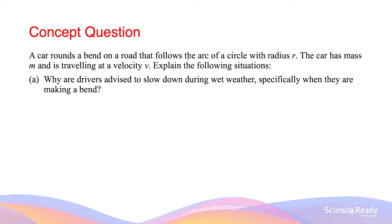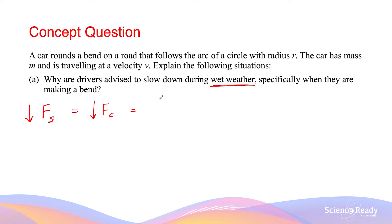A car rounds a bend on a road that follows an arc of a circle with radius r, mass m, and velocity v. Why are drivers advised to slow down during wet weather when making a bend? During wet weather the surface is wet, so the static friction fs is reduced. Since friction provides the centripetal force, this gives a lower centripetal force fc. Since fc = mv²/r and mass and radius are constant, a smaller centripetal force means the velocity must decrease for the car to maintain the same circular motion.